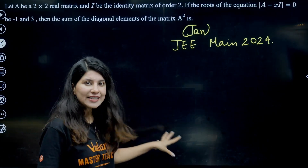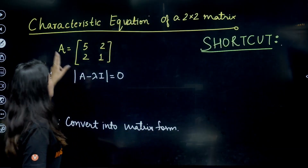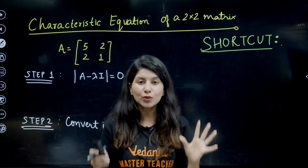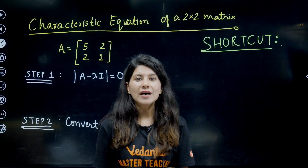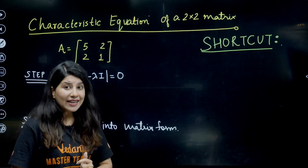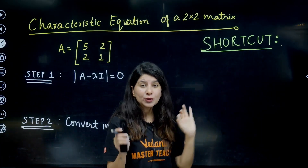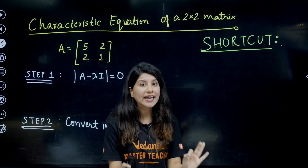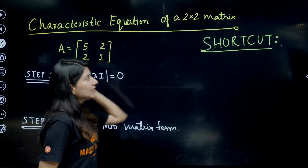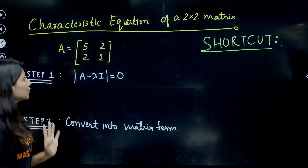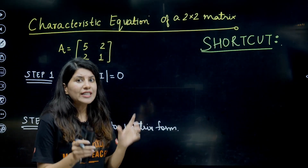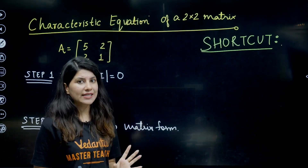Before solving these questions, let us understand the characteristic equation of a 2×2 matrix — how to write it in proper form. It will not take more than 2 minutes, and we have a direct shortcut to write the matrix equation. Suppose this is your 2×2 matrix. There are certain steps we need to follow to reach that matrix equation.